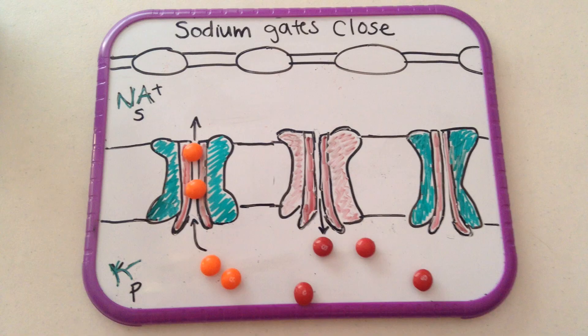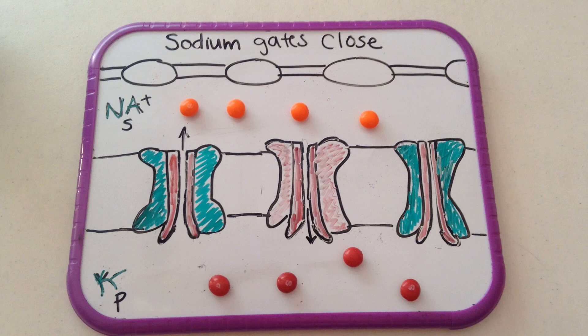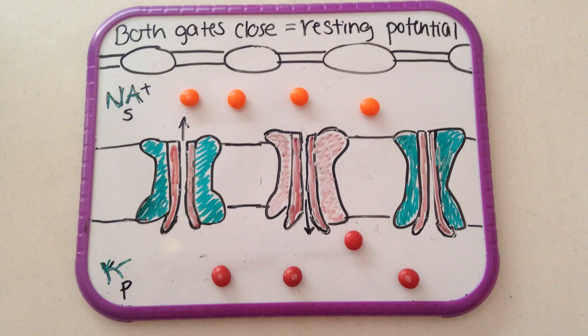The inactivation gates of sodium start to close and sodium ions begin to slow down. Potassium channels stay open and move along the cell. This will last to bring membrane potential back to its resting level. Lastly, both gates close, re-establishing resting potential.